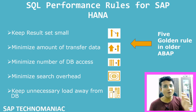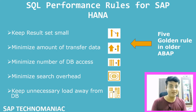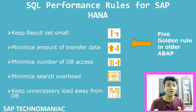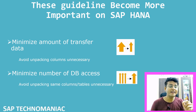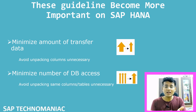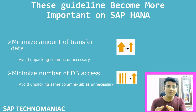Now, out of these rules, some are more important and some are less important when working on ABAP on HANA. The two guidelines that become more important on SAP HANA are: first, minimize the amount of data transfer — meaning we have to fetch only the required columns. This is more important on ABAP on HANA because data is stored in HANA's columnar store in compressed form.